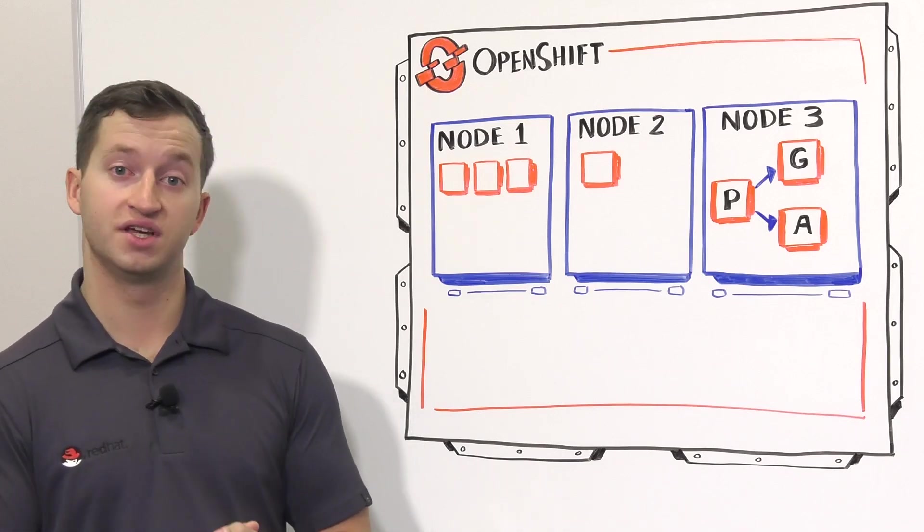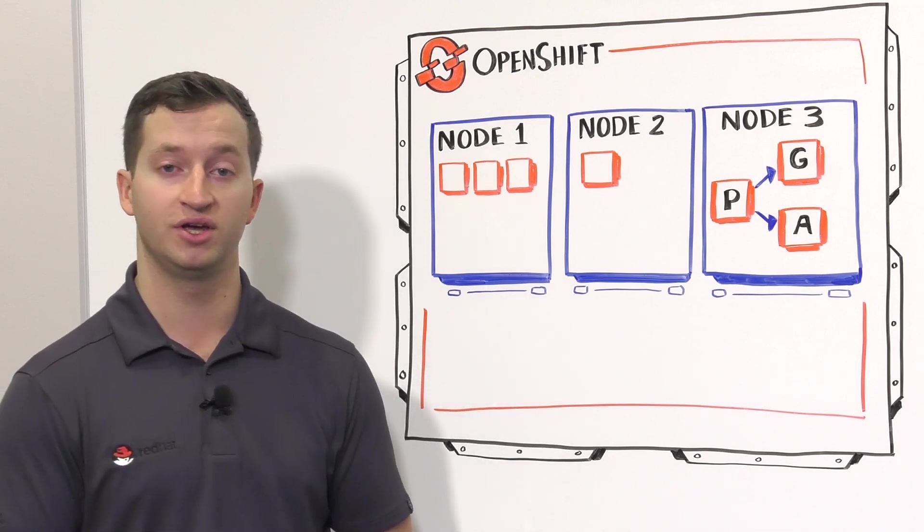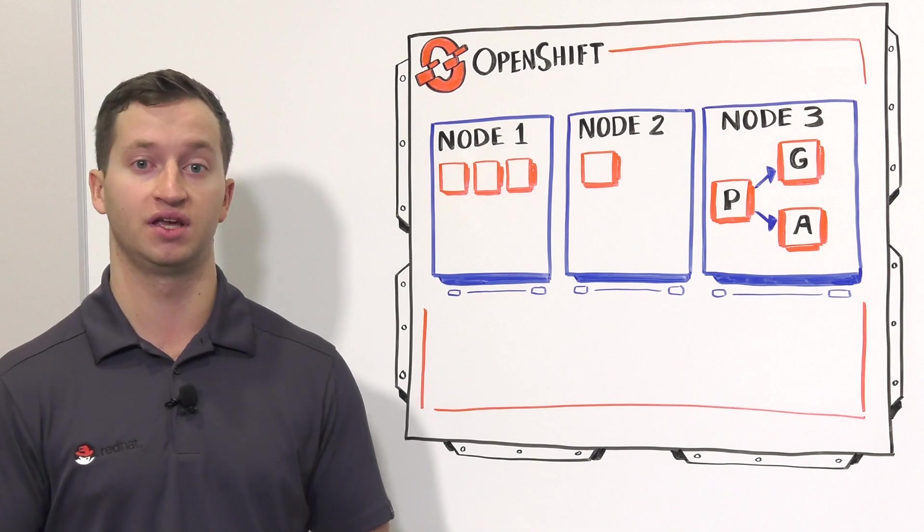So one great visualization tool is Grafana, which pulls data from the Prometheus database into a number of dashboards to help you better visualize the metrics sitting in that database. Does that sound useful?